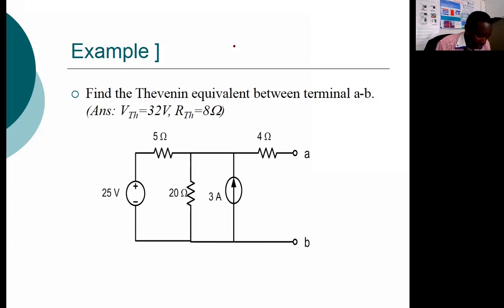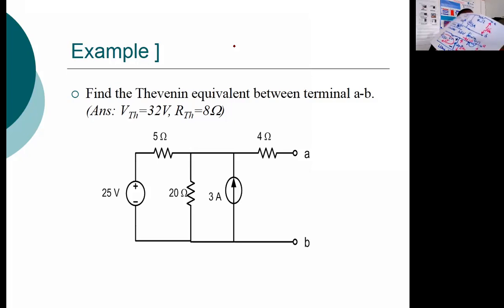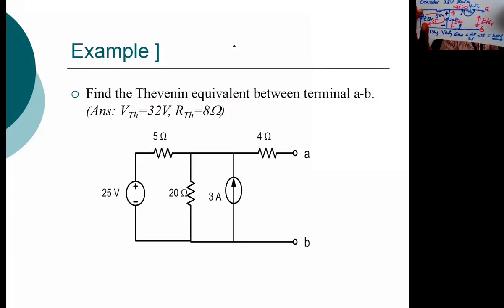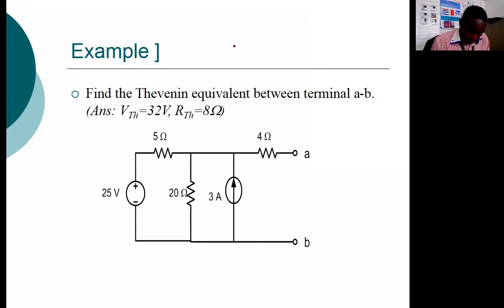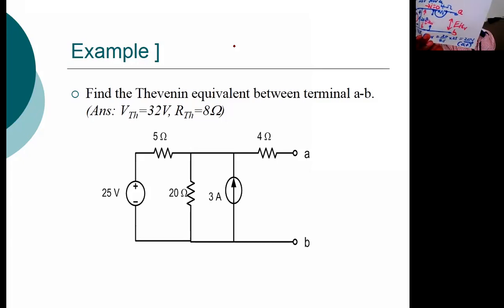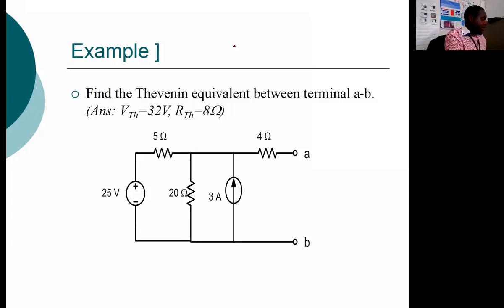The polarity is very important. The current flows from positive to negative with respect to the voltage source, giving a positive polarity at A and negative at B. So A is positive according to the voltage source. Since we are using superposition, we now also consider the 3-ampere current source.